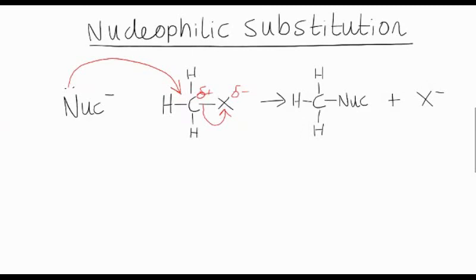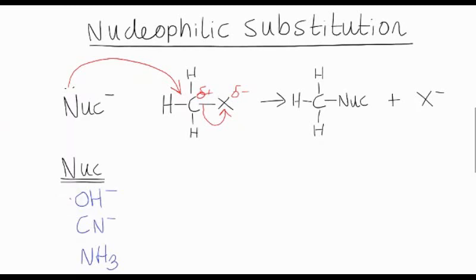So, what types of nucleophiles could we have? There are different nucleophiles. For example, a hydroxide ion can act as a nucleophile, or a cyanide ion CN⁻, or an ammonia molecule. The thing they all share in common is they all have an electron pair that can attack a delta plus carbon atom in a molecule. The X represents a halogen atom — for example, it could be fluorine, chlorine, or bromine.